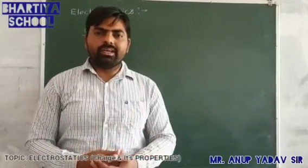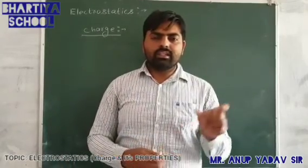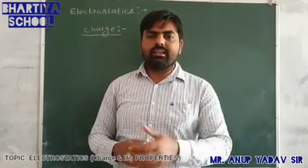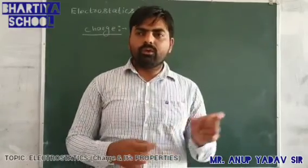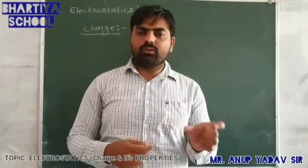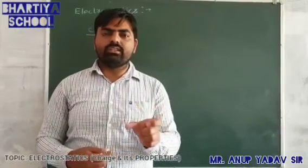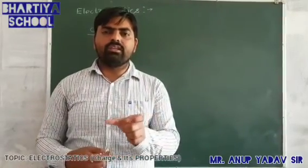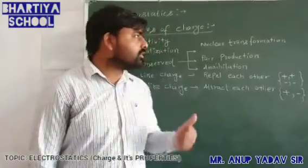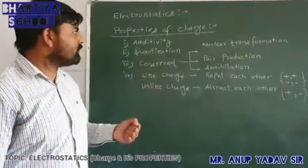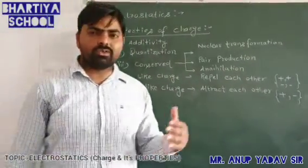By convention, as stated by Benjamin Franklin, charges are of two types: positive charge and negative charge. In magnitude, both of them have equal values, that is plus or minus 1.6 × 10⁻¹⁹ coulombs. Our next topic is the properties of charge.